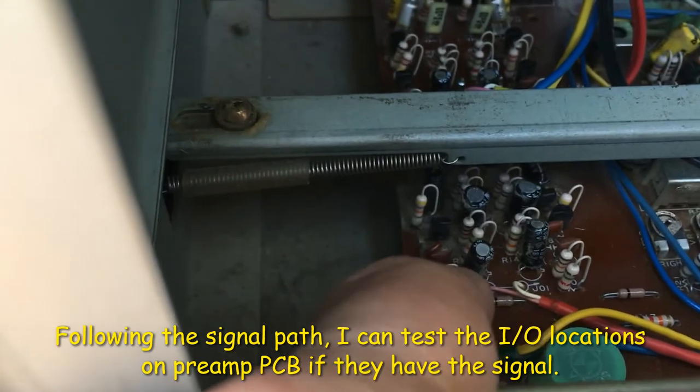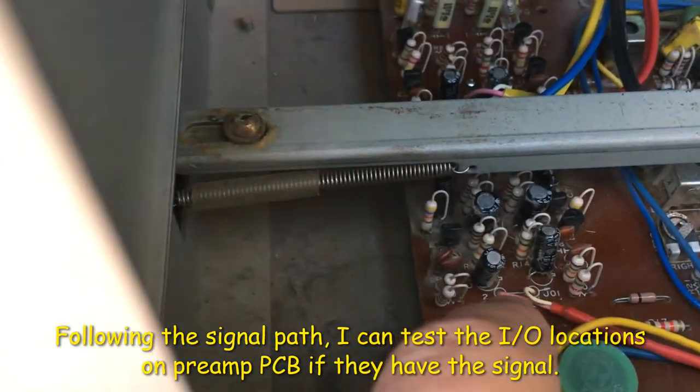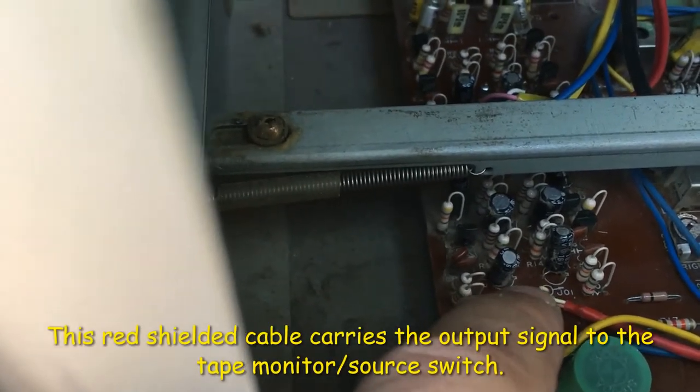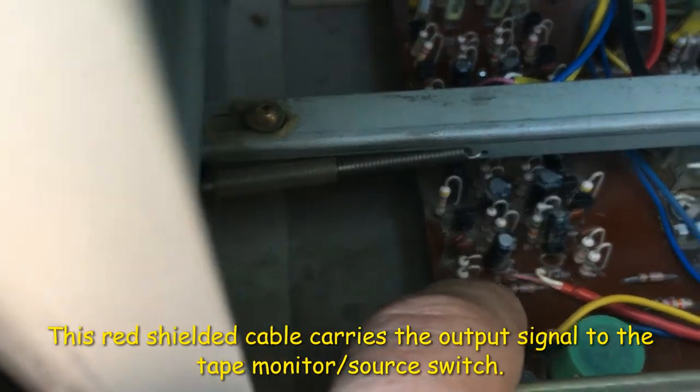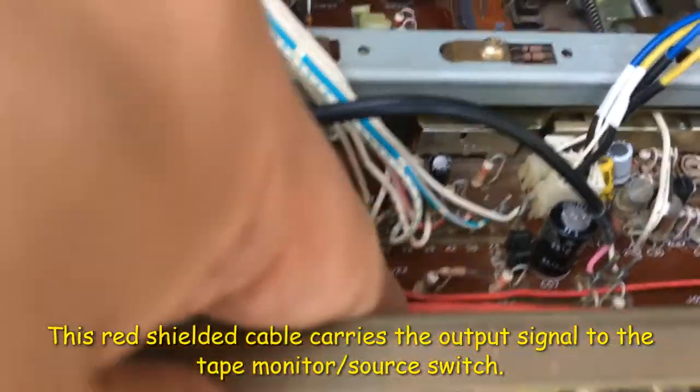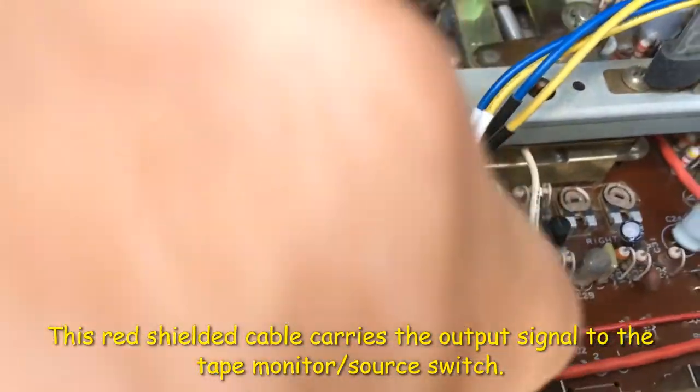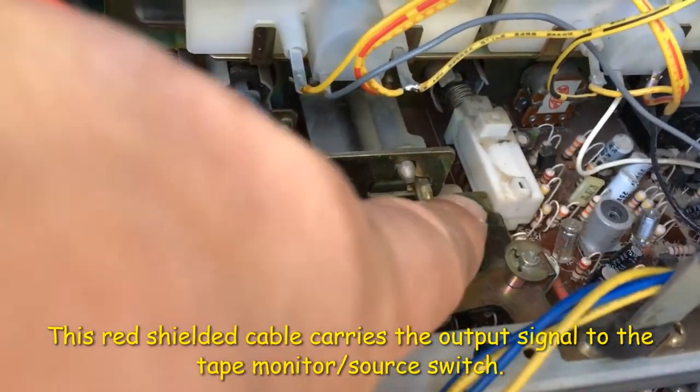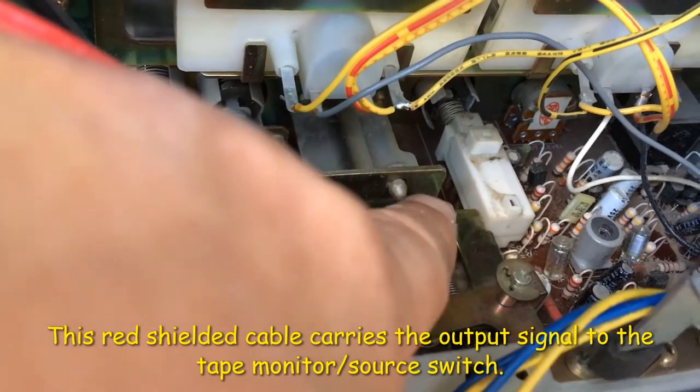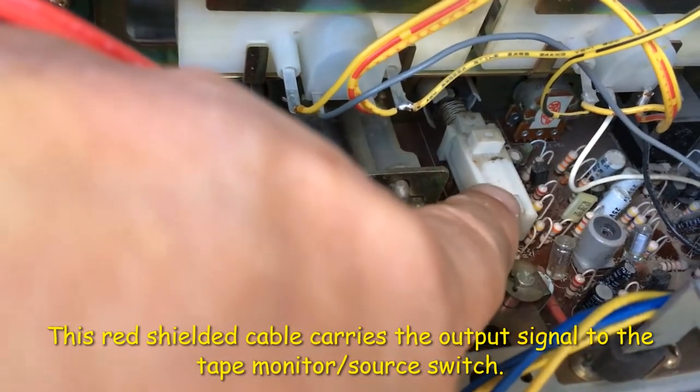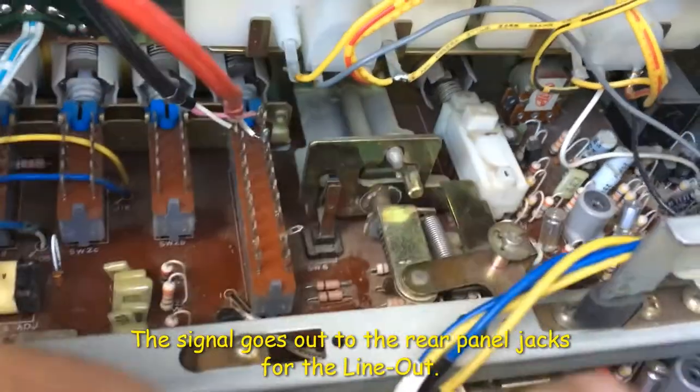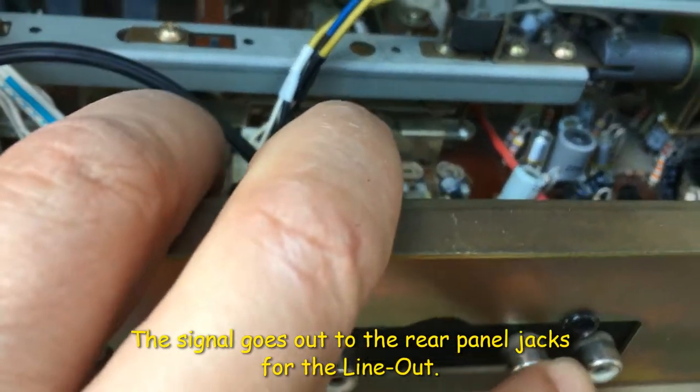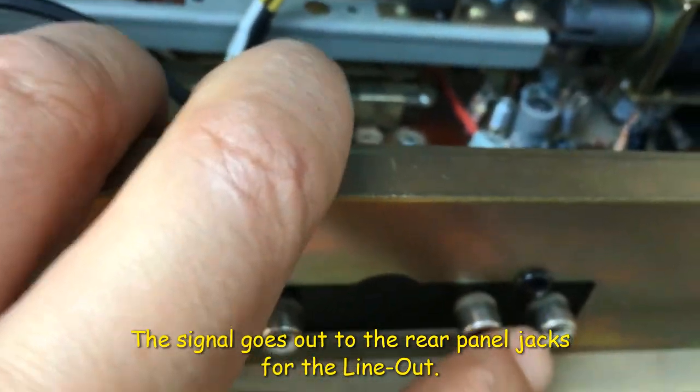The signal comes to here. This red cable is for output from preamp. White for left and pink for right channel. And follow this up, the red cable. You can see it goes into the monitor source switch right here. And after this switch, the signal will go out to the output jack here. This is the output left and output right.